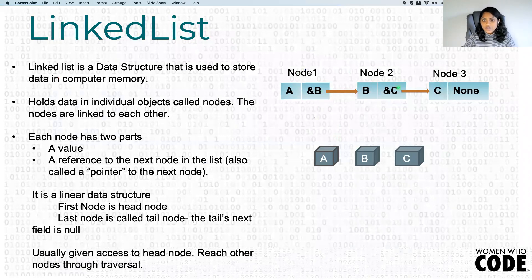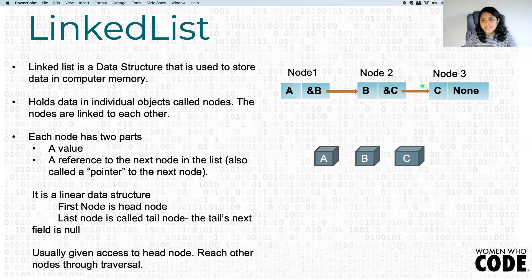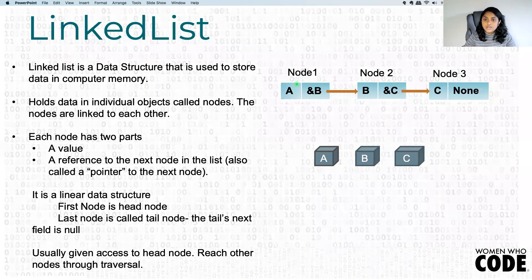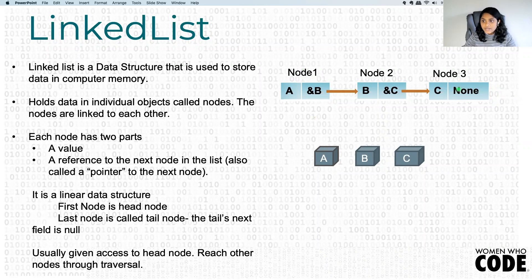There are three nodes: node one, node two, node three, and each node is connected to each other. Node A has a reference to the next node which is node B, and node B has a reference to the next node which is node C. This is the basic structure of a linked list. The first node is usually called the head node, and the last node is called the tail node. The last node in the linked list doesn't have any reference — it points to a null value or none, because it's the last node and doesn't have any node to point to.